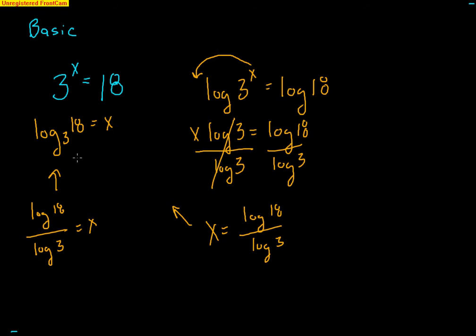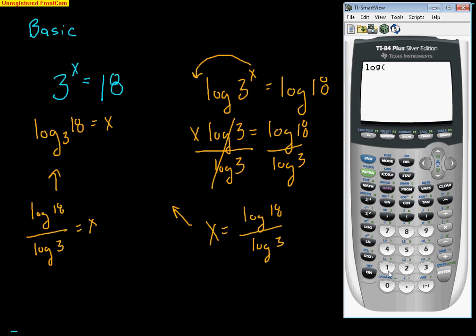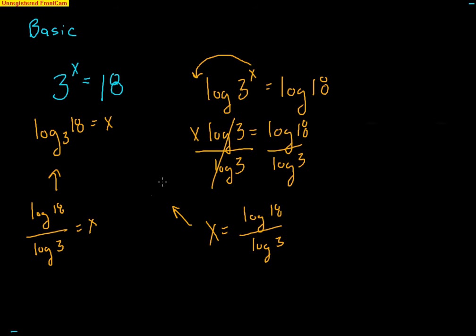Using logs to help solve is very simple. With a base like 3, we use our base-10 calculator: type log(18) divided by log(3). I like to check as well — 3 raised to approximately 2.6309 gives 17.999, which is very close to 18. Either way, you end up with the exact same answer. You can leave it as log base 3 of 18 or as the decimal equivalent.